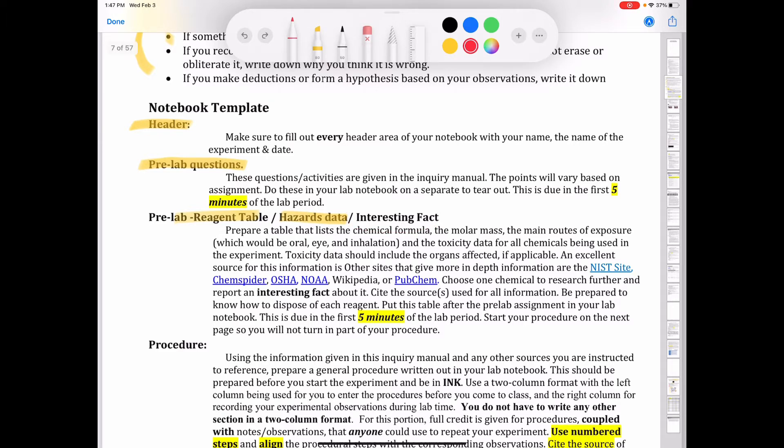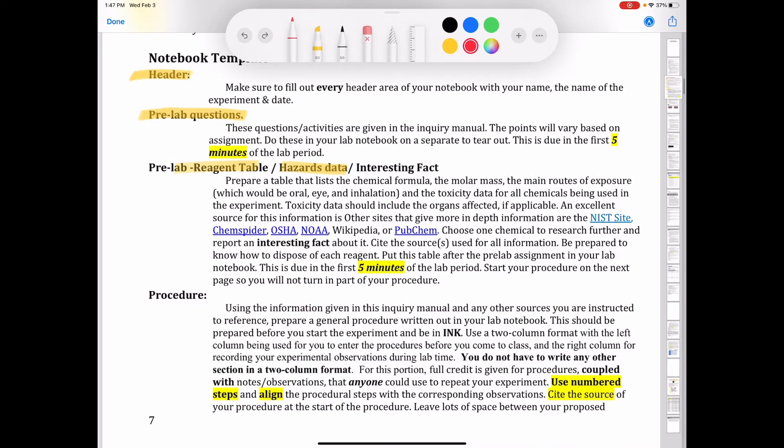Now, what is a reagent table? A reagent table is a table that lists the chemical formula, molar mass, and the main routes of exposure, and all the toxicity data for all the chemicals being used in the experiment. An excellent source for this information could be the NIST site, ChemSpider, OSHA, NOAA, Wikipedia, or PubChem. So you can use any one of those to find the information about all the chemicals that you're going to be using in this lab.